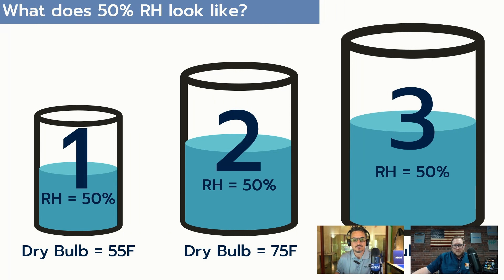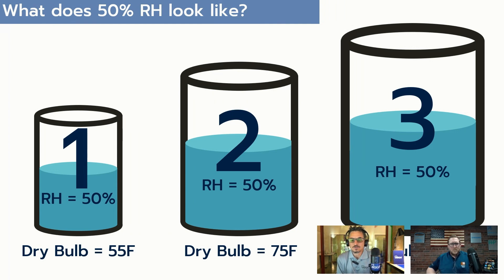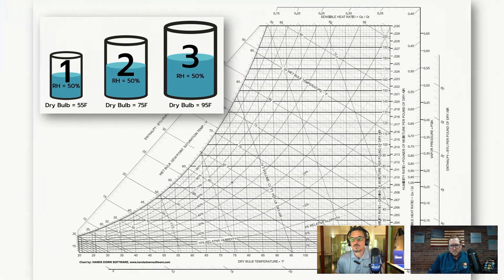We'll throw some numbers on here because we're going to reference them in a moment. What do you notice about the water volume in these three containers? It's a lot larger in container three than one. That's the flaw with using relative humidity as an indicator of how much moisture is in the air — they all have the same value, but one has a lot less moisture. It's dependent on the temperature, which is where we can get in trouble in the HVAC business.